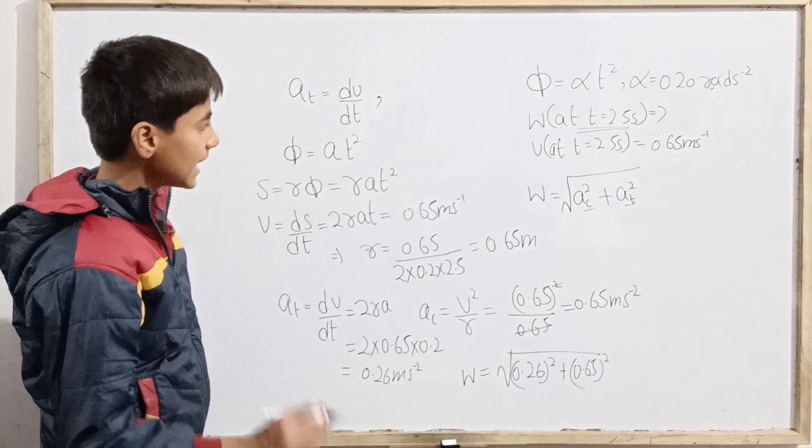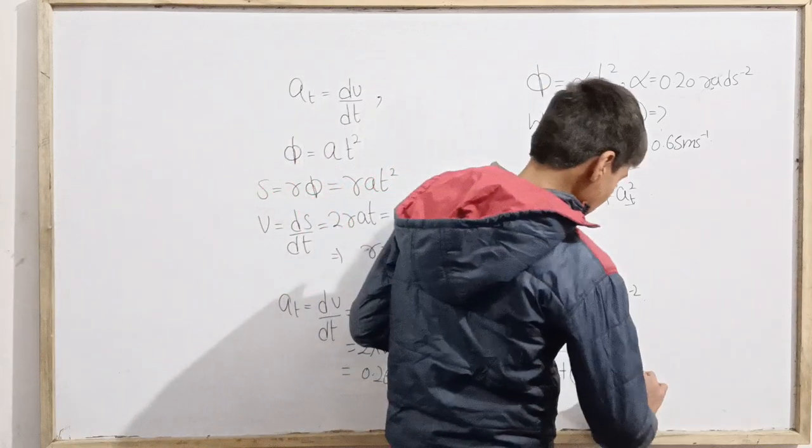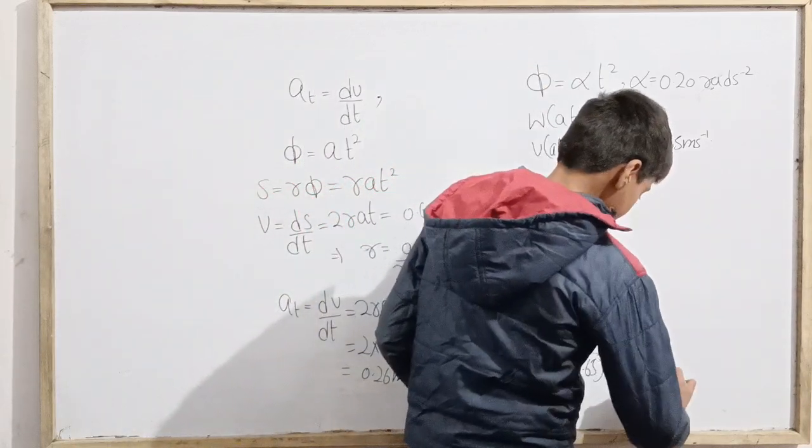Now what we will really do is w equals square root of 0.26 squared plus 0.65 squared. Now if we evaluate this, we see that this will become a very large decimal value.